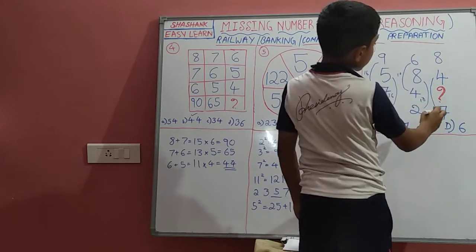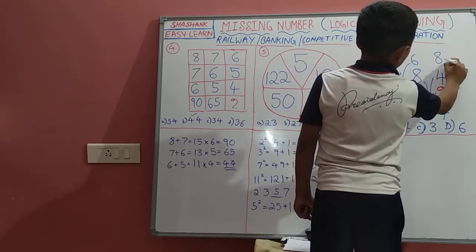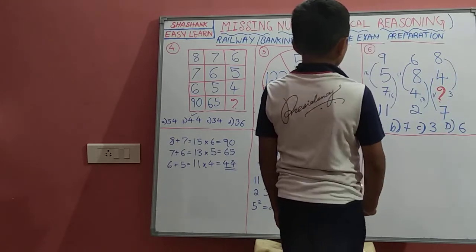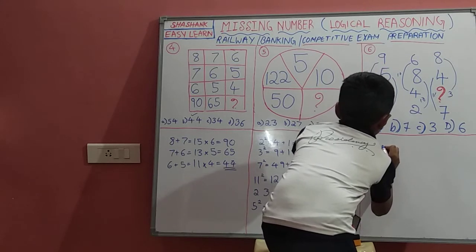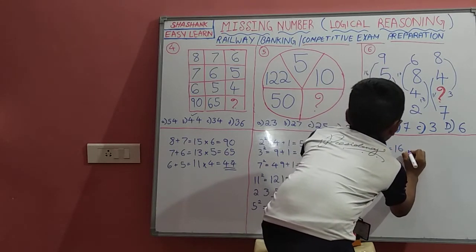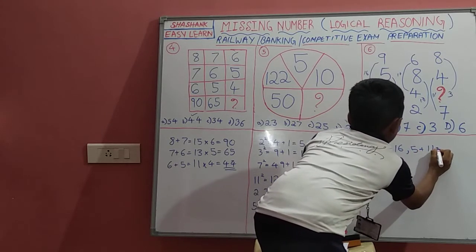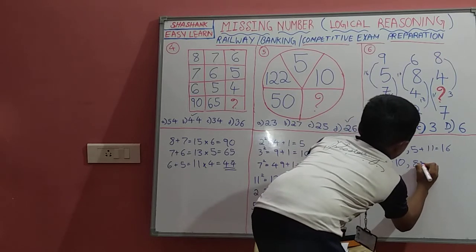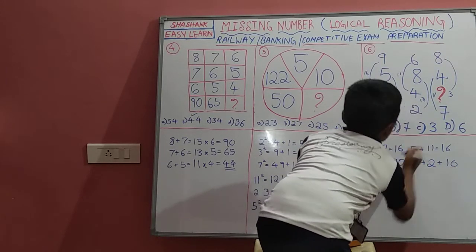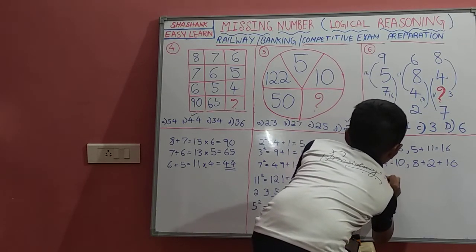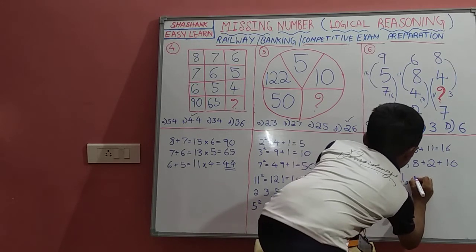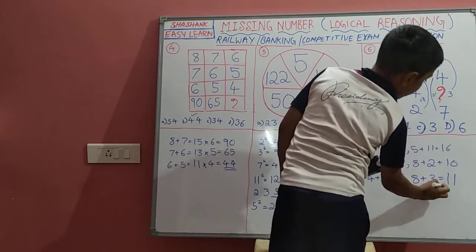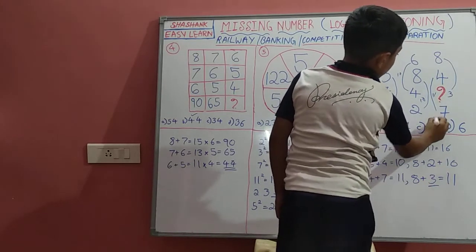4 plus 7 is 11, and we have to add 8. So we have to add 3 to get 11. So 9 plus 7 is 16, and 5 plus 11 is 16. 6 plus 4 is 10, and 8 plus 2 is 10. 4 plus 7 is 11, and 8 plus 3 is 11. So 3 is the right answer, and C is the right answer.